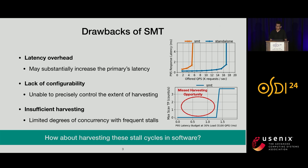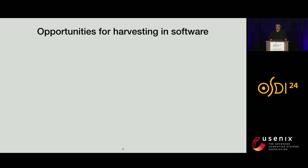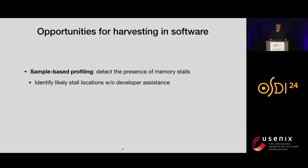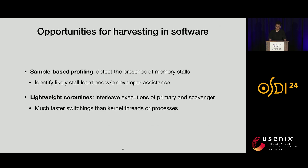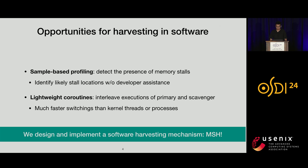In search for a better harvesting mechanism for memory stalls, we ask: how about harvesting these stall cycles in software? As pointed out by a recent proposal, there are exciting opportunities here. Sample-based profiling using hardware performance counters makes it possible to detect the presence of memory stalls accurately without developer assistance. Additionally, lightweight coroutines allow fine-grained interleaving of primary and scavenger execution, because context switches are much faster without expensive system calls or changes to virtual memory mapping. Building on these techniques, we design and implement MSH, which stands for Memory Stall Software Harvester.